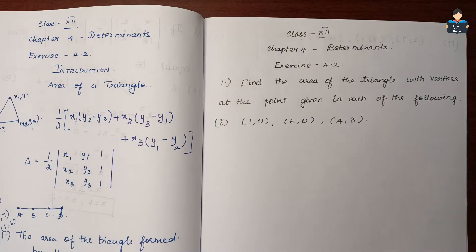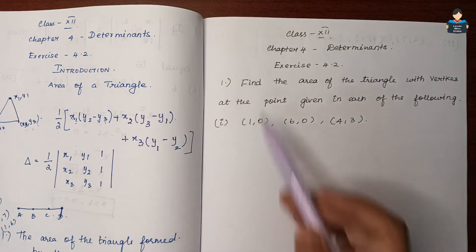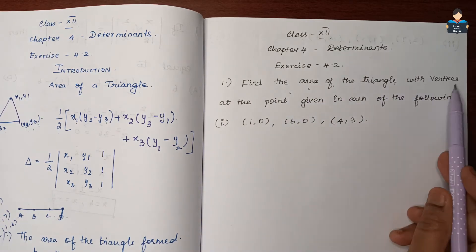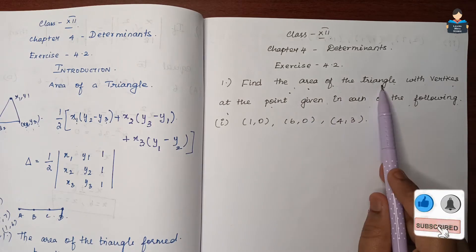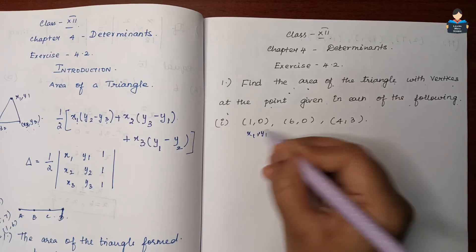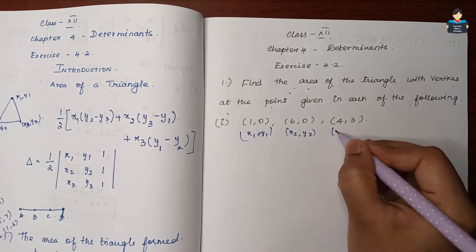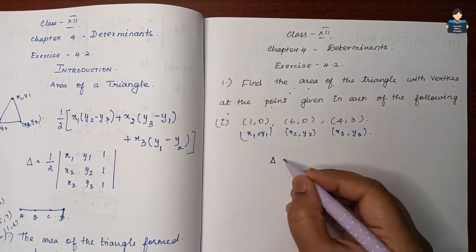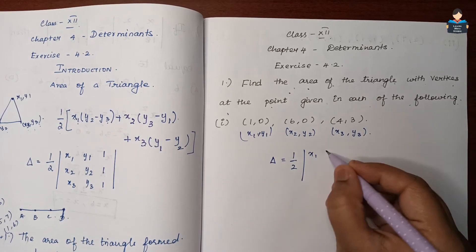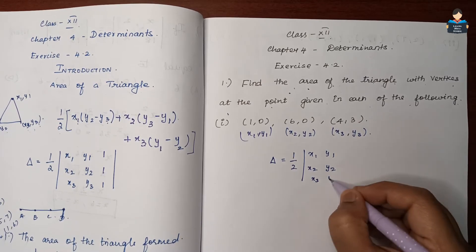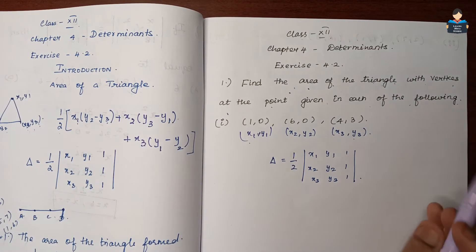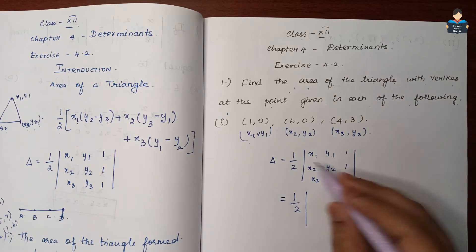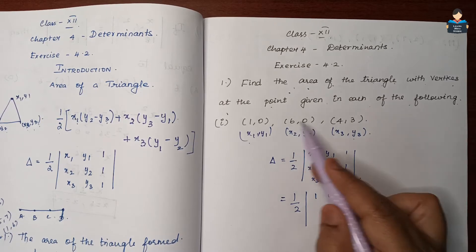Hello everyone, welcome to our channel. In this video, Class 12 Chapter 4 Determinants, Exercise 4.2, first question: find the area of the triangle with vertices at the points given in each of the following. So find x1 y1, x2 y2, and x3 y3. Area of the triangle in terms of determinant is half times the determinant of x1 y1 1, x2 y2 1, x3 y3 1. We substitute: x1 y1 = (1,0), x2 y2 = (6,0).